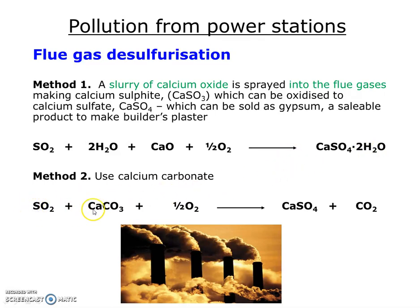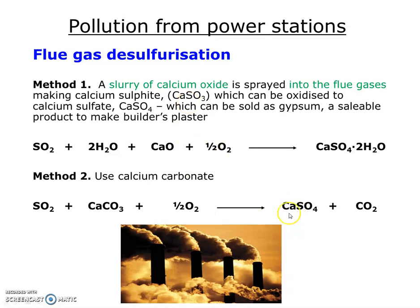Alternatively, you could use solid calcium carbonate — like a mesh or sieve with lumps of calcium carbonate on top, and the gases are forced up through it. This equation is slightly simpler to recall: sulfur dioxide plus calcium carbonate plus oxygen converts calcium sulfite directly to calcium sulfate. The downside to this process is that it causes the release of carbon dioxide.